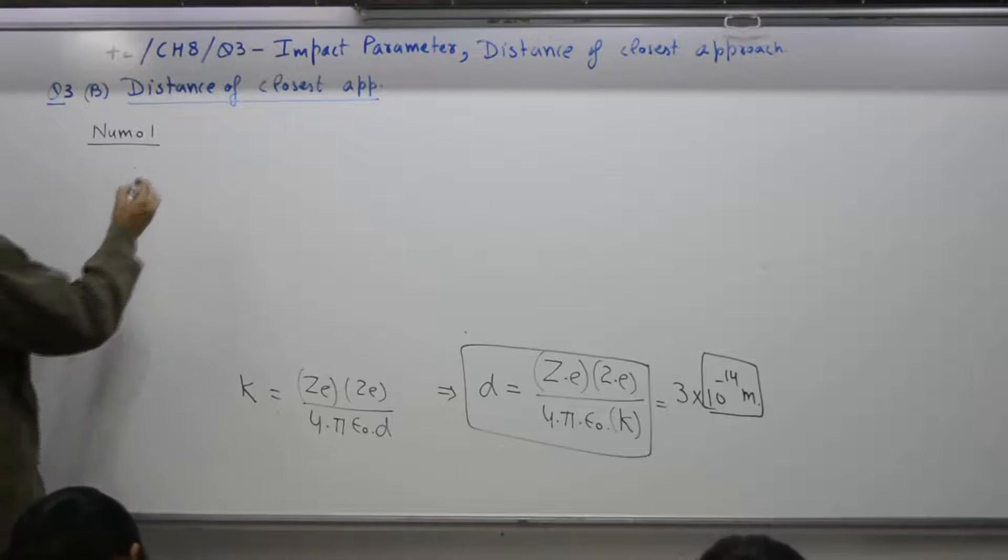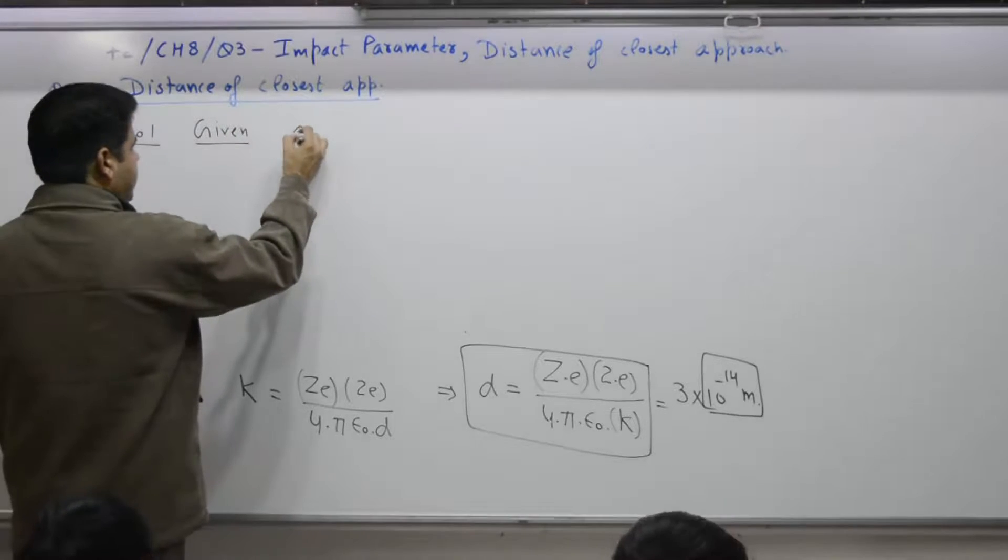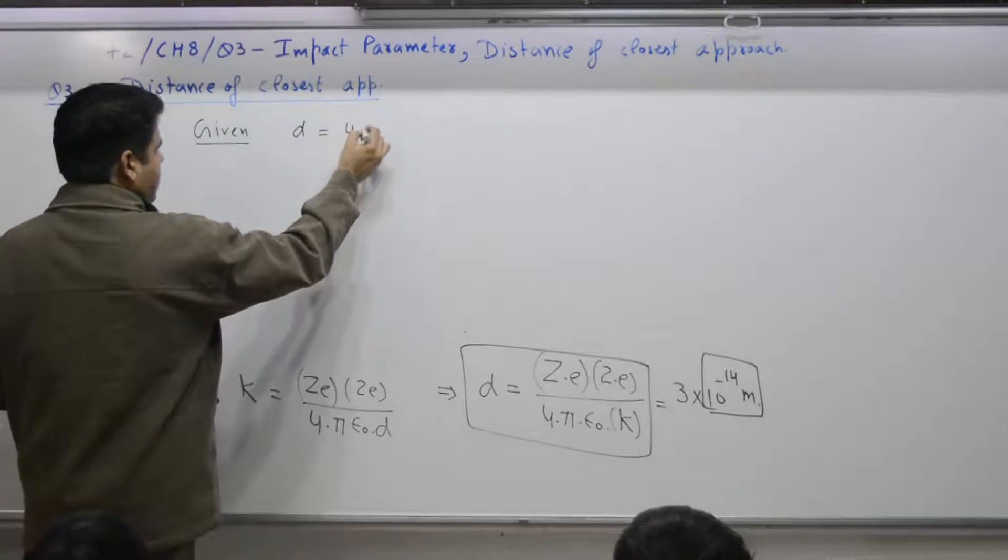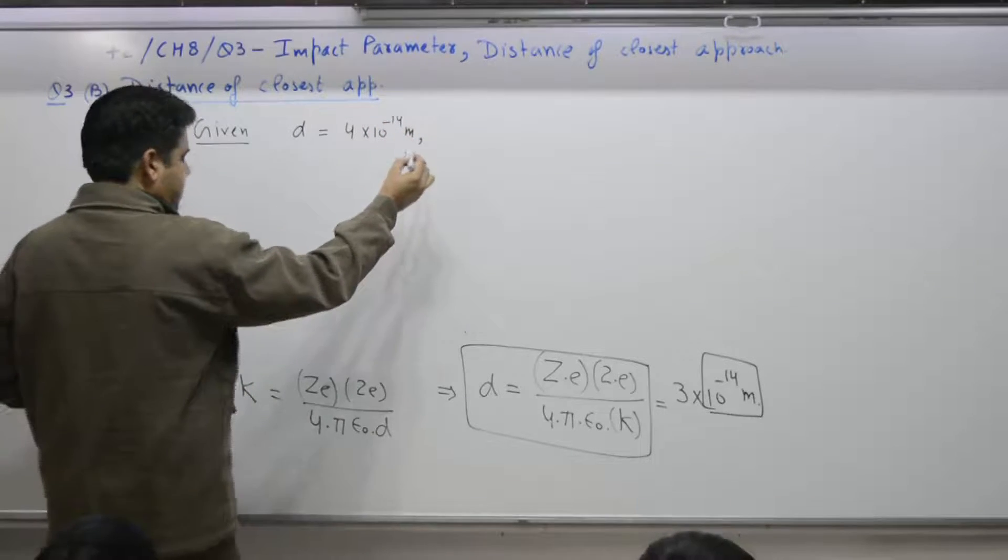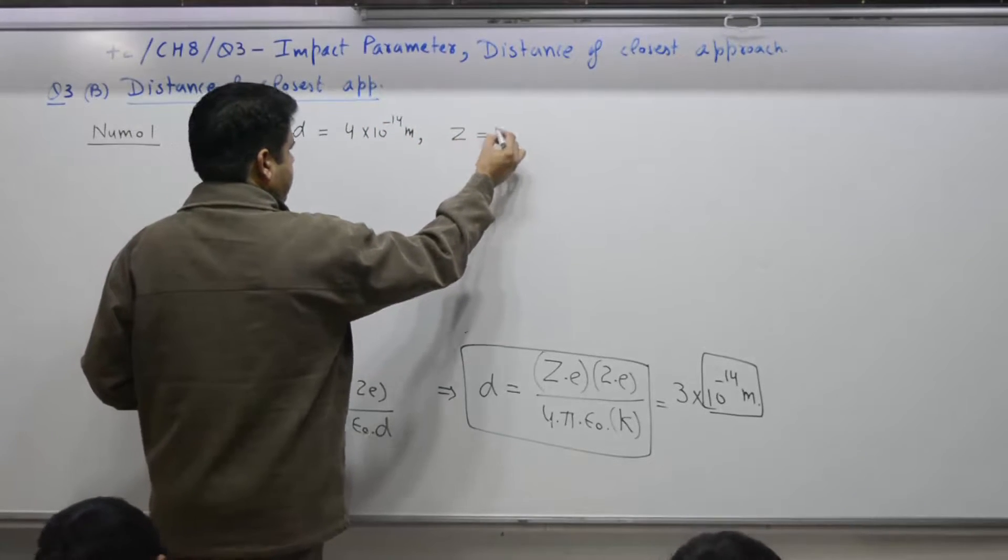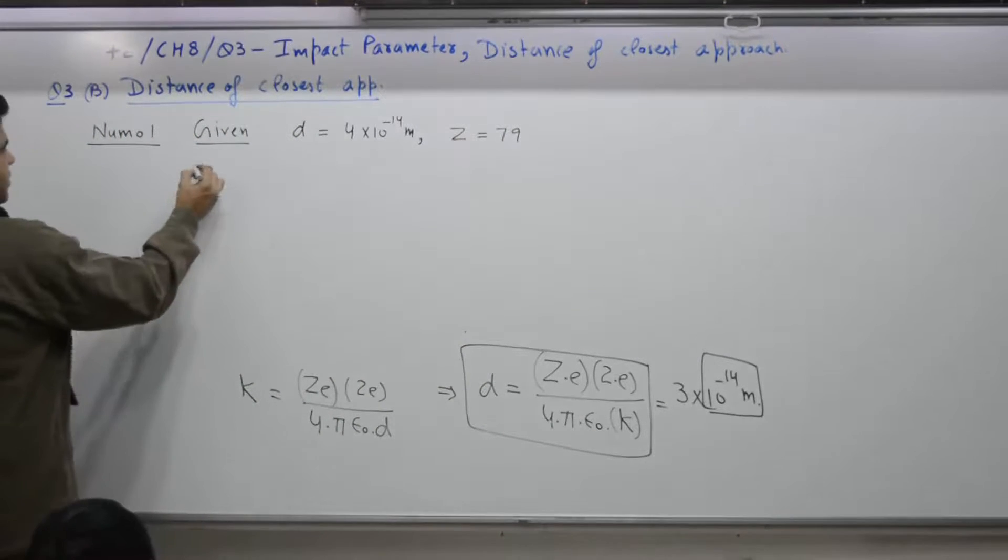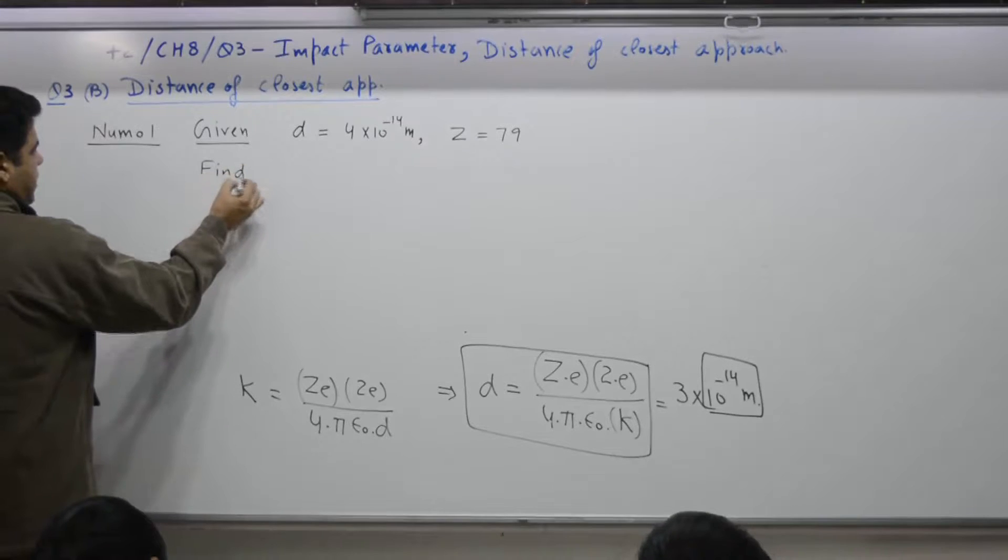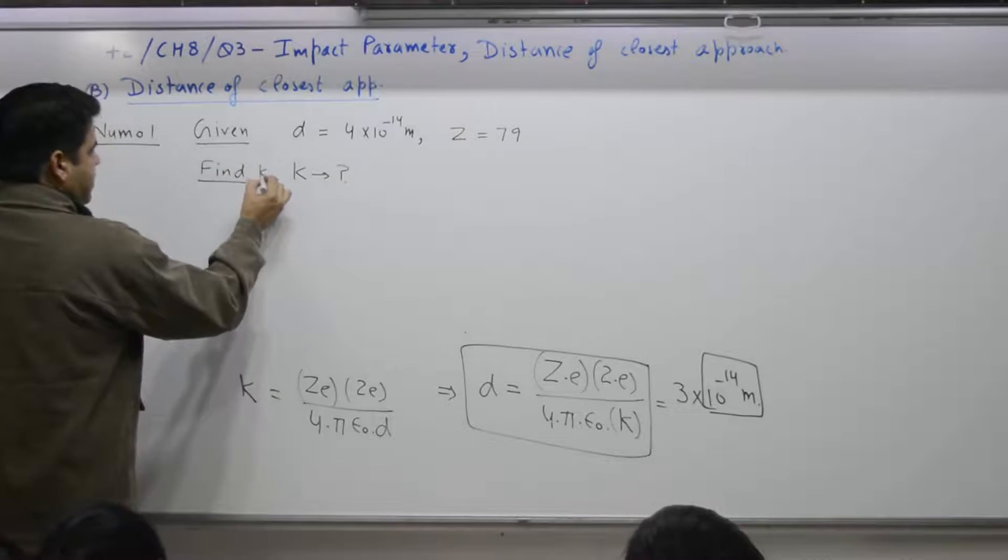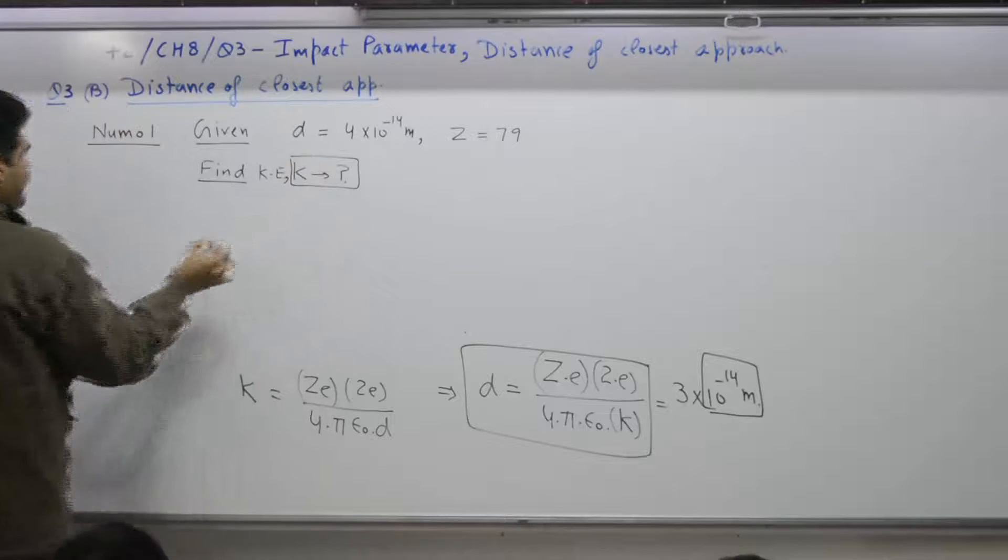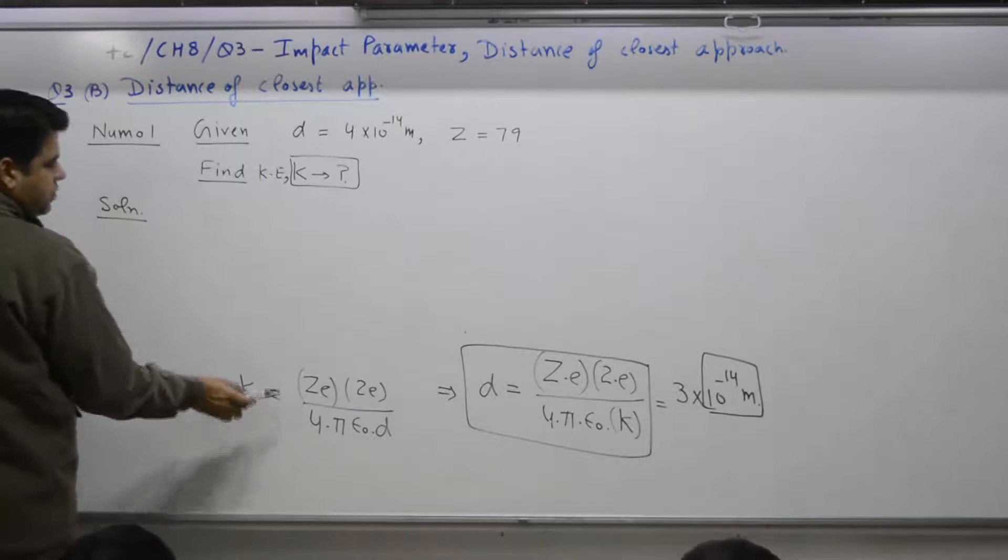Given is what? Yes. Distance of closest approach. How much? 4 times 10^-14 meters. What else? Z. 79. You have to find out what? Kinetic energy K.